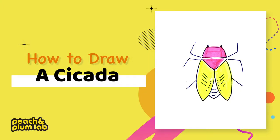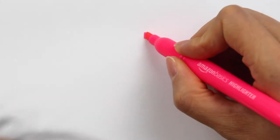Hello everyone, this is Lee from Peach and Plum Lab, a place for creative kids to learn and grow. Today I'm going to show you how to draw a cicada. First of all, I'm going to use pink color.